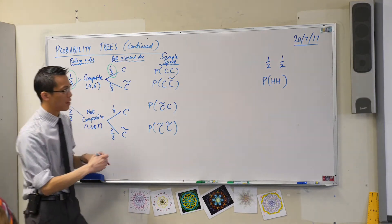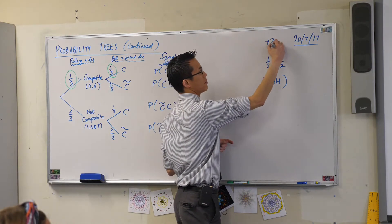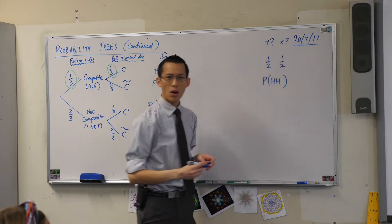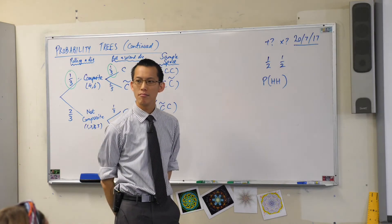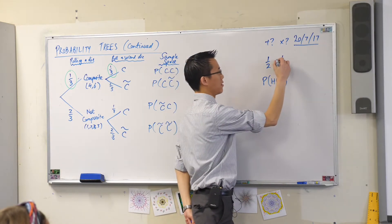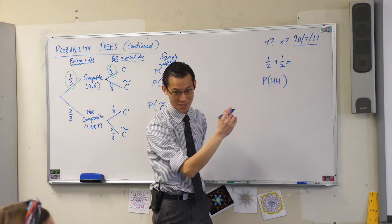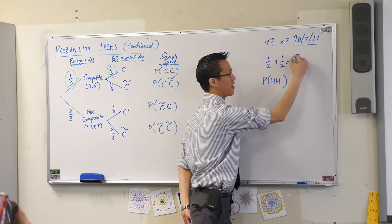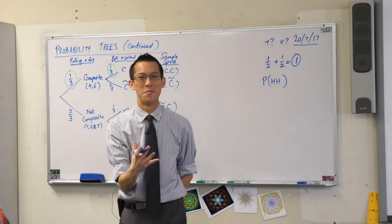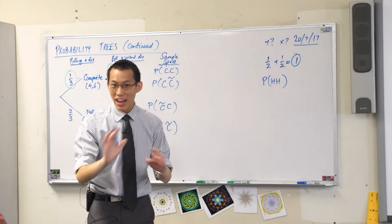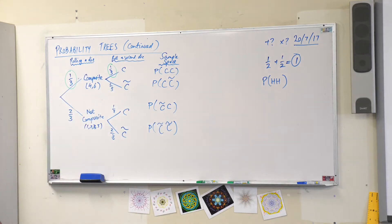Now, just like here, I've got a multi-stage event. Do I add or do I multiply? What would happen if I added? A half plus a half is one. What does that mean in probability terms? That means it's going to happen, guaranteed, right?